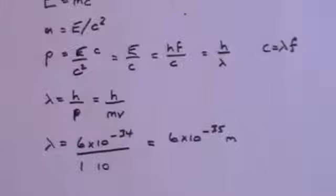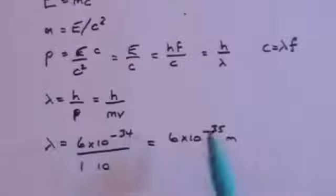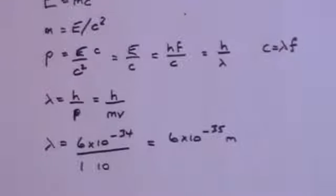So Einstein's experiment with the photoelectric effect said that light, which we'd always thought of as a wave, can also behave like a particle — a photon. And de Broglie's theory has shown that electrons, and indeed cricket balls, which we'd always thought of as particles, can also behave like waves. How does that help?